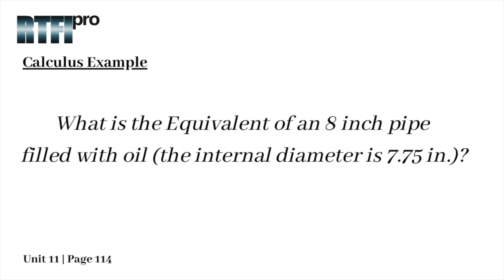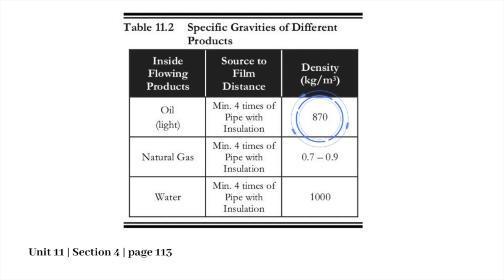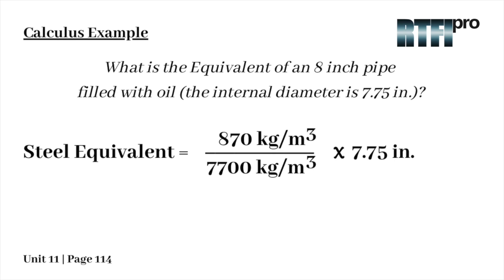Here is an example: What is the steel equivalent of an 8-inch pipe filled with oil? The internal diameter is 7.75 inches. Steel equivalent equals 870 kilograms per cubic meter — as we can verify through the table — divided by 7,700 kilograms per cubic meter, multiplied by 7.75 inches, which equals 0.876 inches. So an 8-inch pipe filled with oil will have a steel equivalent of 0.876 inches.